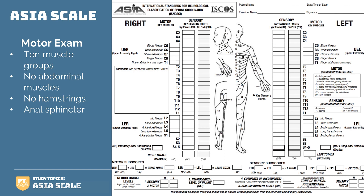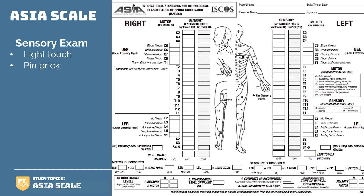Let's take a look at the sensory aspect of this exam. The sensory level is determined by performing light touch and pin prick. The most caudal level with intact sensation defines the level of involvement. The level of the lesion is defined as the most caudal segment of the spinal cord with normal sensory and motor function on both sides.